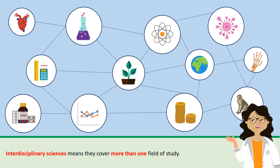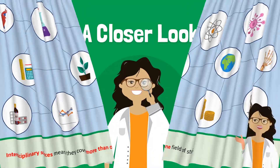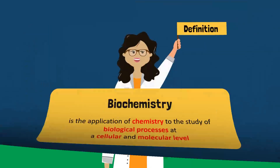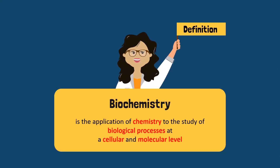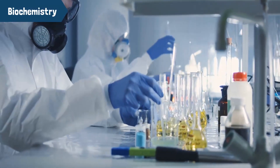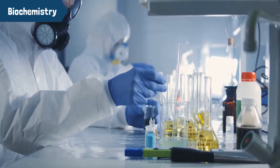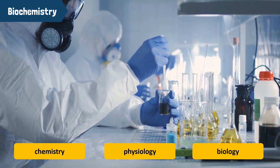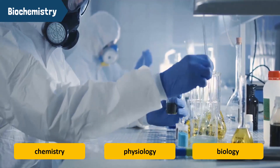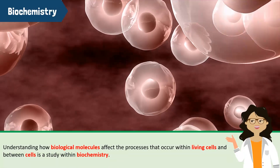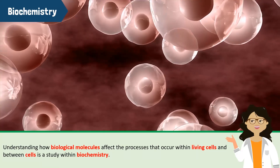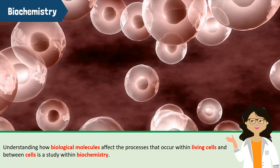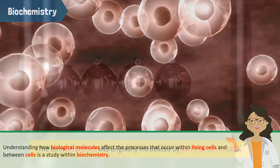Let's take a closer look at some examples. Biochemistry is the application of chemistry to the study of biological processes at the cellular and molecular level. It emerged as a separate discipline around the beginning of the 20th century when scientists combined chemistry, physiology, and biology to investigate the chemistry of living systems. For example, understanding how biological molecules affect the processes that occur within and between living cells is a study within biochemistry.